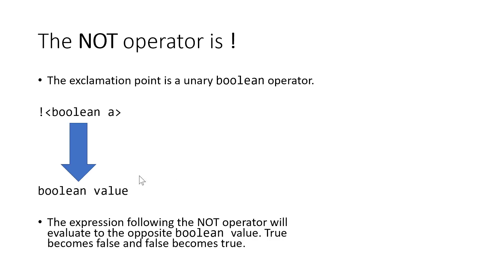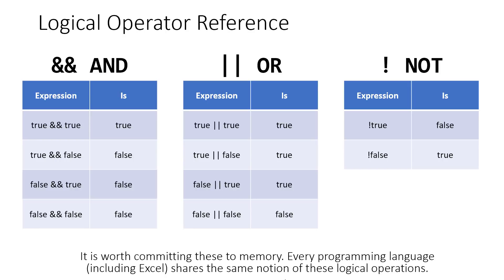The not operator is the single exclamation point. And you use this with only one single Boolean value. So we can say something like not true, and that will be false. So its truth table is pretty simple. Not true is false and not false is true. It negates or inverts whatever the Boolean value was before.